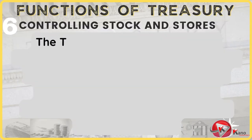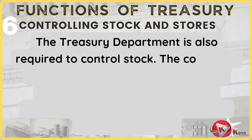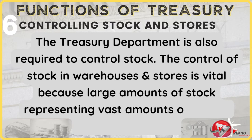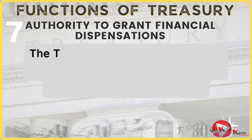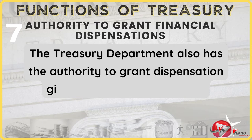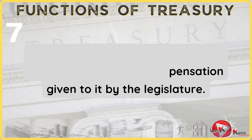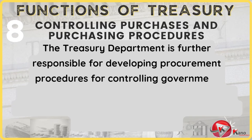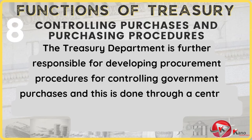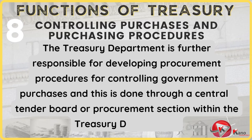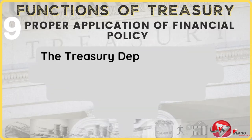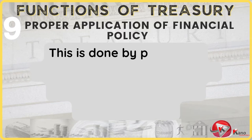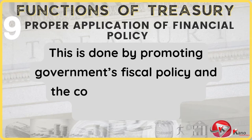The Treasury Department is required to determine whether or not all government departments have properly motivated budget proposals. The Treasury Department further acts as a watchdog by guarding public funds from misuse and ensuring the proper usage and withdrawal of public funds by all government departments and government officials. The Treasury Department is also required to control stock. The control of stock in warehouses and stores is vital because large amounts of stock representing vast amounts of money are invested there. The Treasury Department also has the authority to grant dispensation given to it by the legislature, and is further responsible for developing procurement procedures for the purpose of controlling government purchases, normally done through a central tender board or procurement section. The Treasury Department also ensures that financial policies are interpreted effectively and efficiently, by promoting government's fiscal policy and coordinating macroeconomic policy.